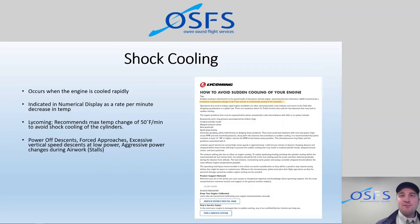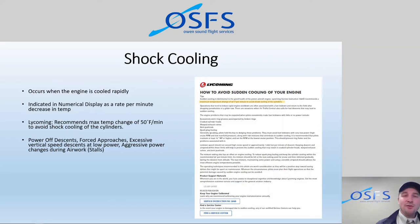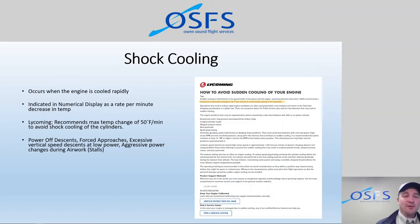We've always done this but never really had a metric to measure it. In the wintertime at minus 10 or minus 20 outside, we don't do that practice. Instead we simulate a zero-power condition by using about 1,500 RPM with 15 to 20 degrees of flap. Those two together give a similar descent profile of around 500 feet per minute. That way we can mitigate excessive engine cooling in the winter.